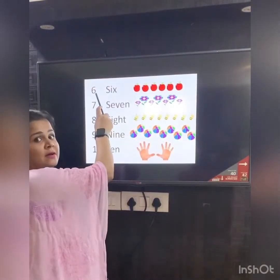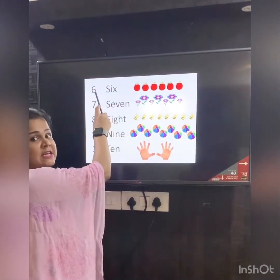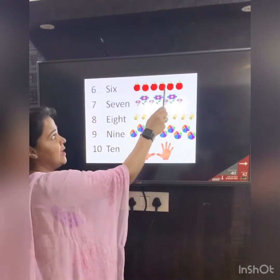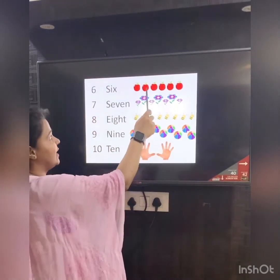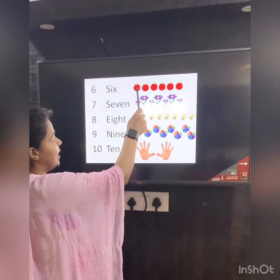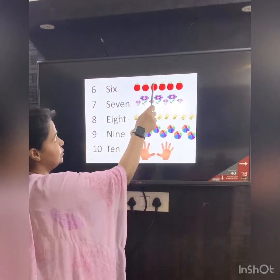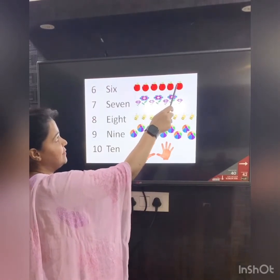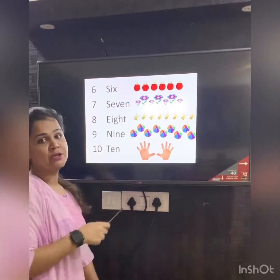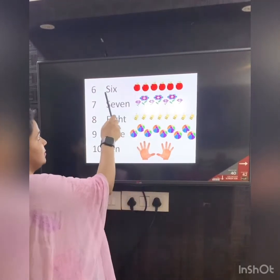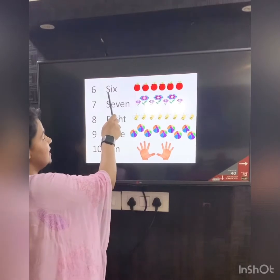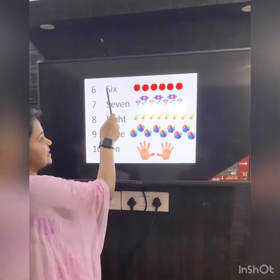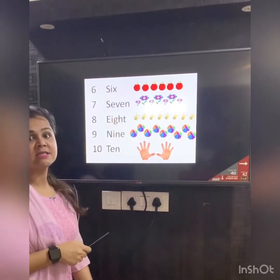Next number here after 5 is 6. We have apples here. Let's count how many apples do we have: 1, 2, 3, 4, 5, 6. So 6 apples. Number name is S-I-X. 6.